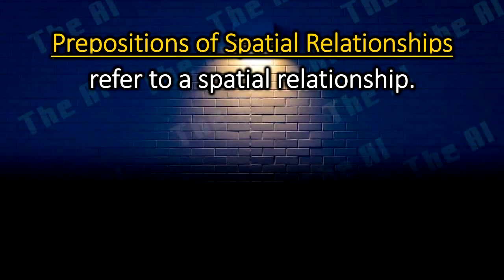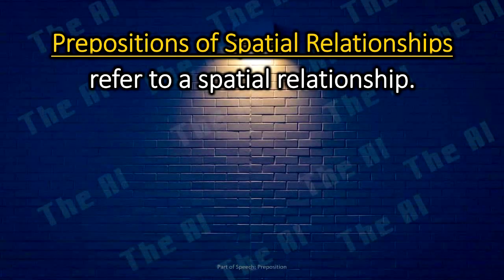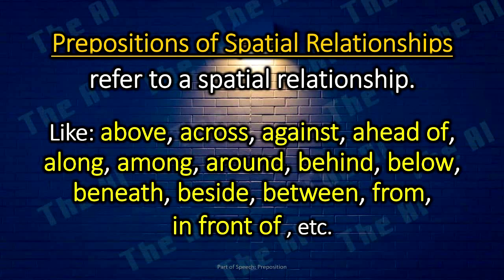Prepositions of spatial relationships. The prepositions of spatial relationships refer to a spatial relationship, like above, across, against, ahead of, along, among, around, behind, below, beneath, beside, between, from, in front of, etc.